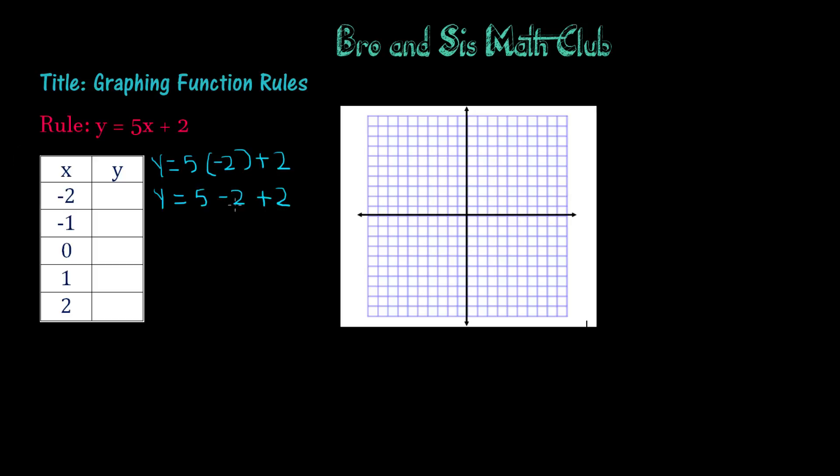And a lot of times we might do this as 5 minus 2 plus 2, which is wrong. So remember to put in whatever you're substituting to the variable in parentheses, because in reality, this is 5x, which is 5 times x, so it's 5 times negative 2. When you multiply 5 times negative 2, you get negative 10, and when you add it to 2, you get negative 8.